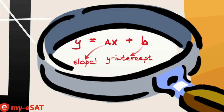y and x in the equation represent every x and y coordinate on the line, so we leave those as variables in the equation since they have many values. a, on the other hand, only has one value — it represents the slope, or steepness or incline, of the line. b likewise has one value, and that's the y-intercept, or the y-coordinate of where the line intersects the y-axis.